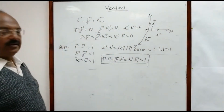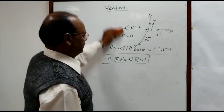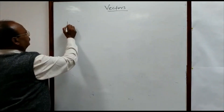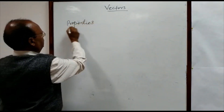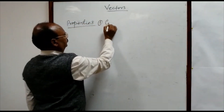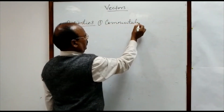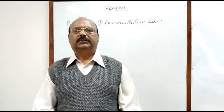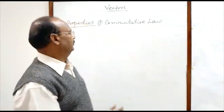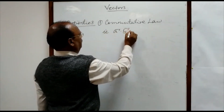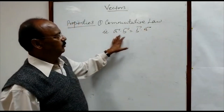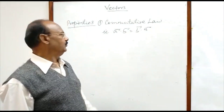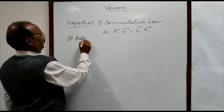Now let us see the properties of the dot product of vectors. The first property is the commutative law. The scalar product or dot product of two vectors is commutative, meaning a dot b equals b dot a. In both cases we get the same value, ab cos theta, where theta is the angle between the two vectors.